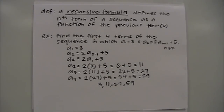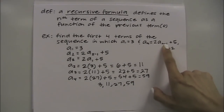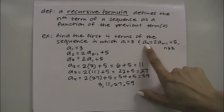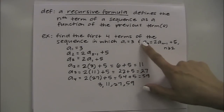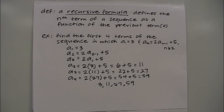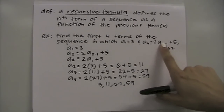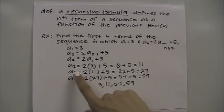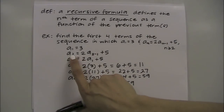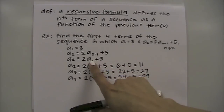With recursive formulas, this one specifically used a sub n and a sub n minus 1 — the term right before. But it could be any variation, such as a sub n minus 2, which would be two terms before. Just be aware of what you're plugging in. You can also always plug in the value of n directly if that makes more sense to you.